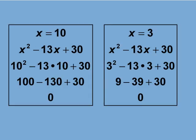We can test each value for x in the quadratic equation we solved to ensure that in each case we get a value of 0. Plug in x equals 10 into the quadratic and the result is 0. The same happens with x equals 3.